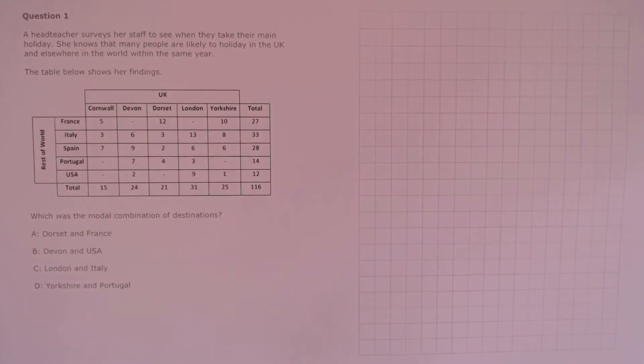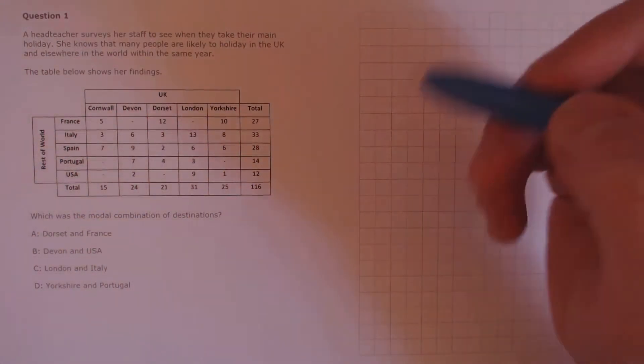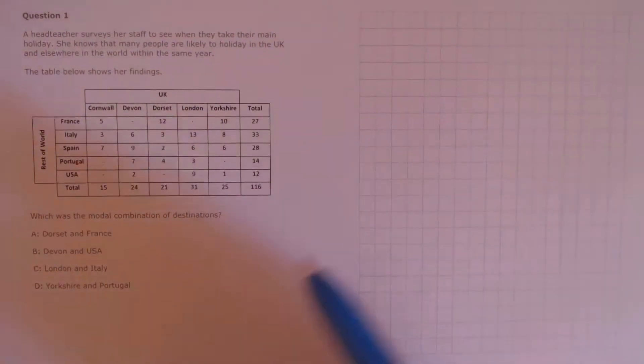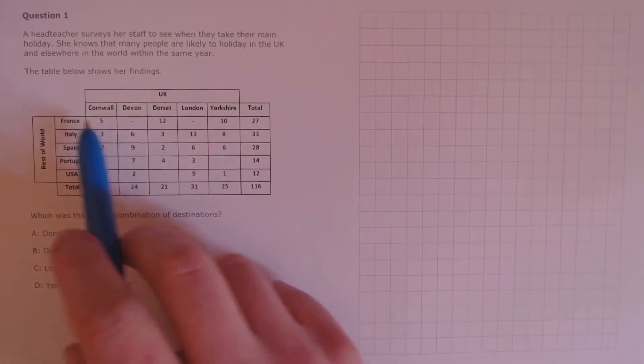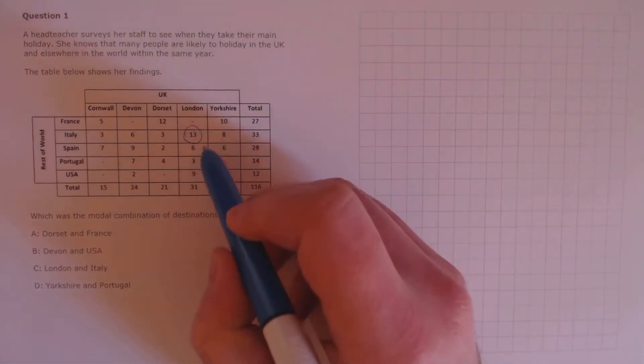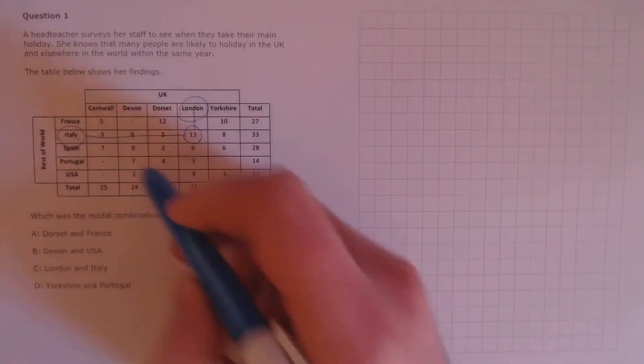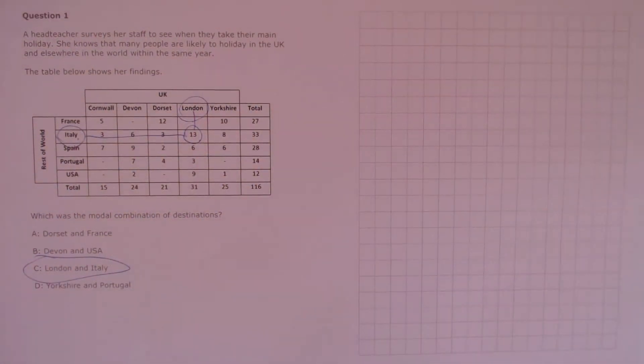Question 1. A headteacher surveys her staff to see when they take their main holiday. She knows that many people are likely to holiday in the UK and elsewhere in the world within the same year. The table below shows her findings. Which was the modal combination of destinations? By the modal combination, they mean the combination of two destinations that happened the most often out of any other pairing. So we're looking for the highest number within this table. If we look, that's this one here, 13, and that combination is Italy and London. Giving us answer C.